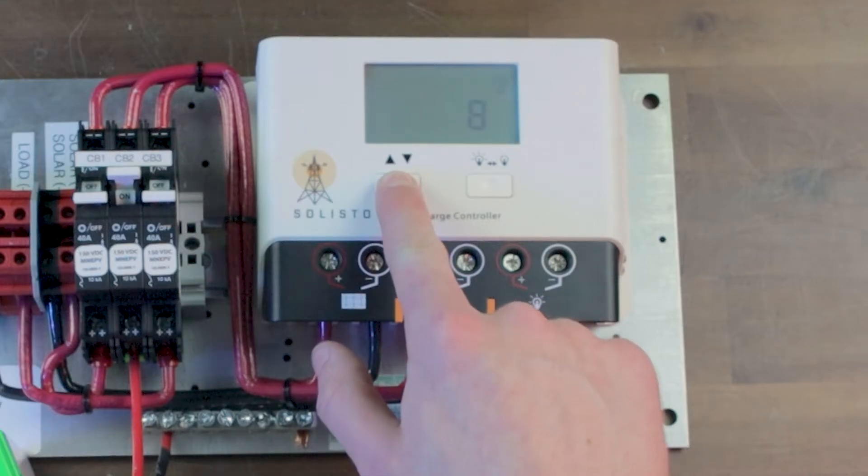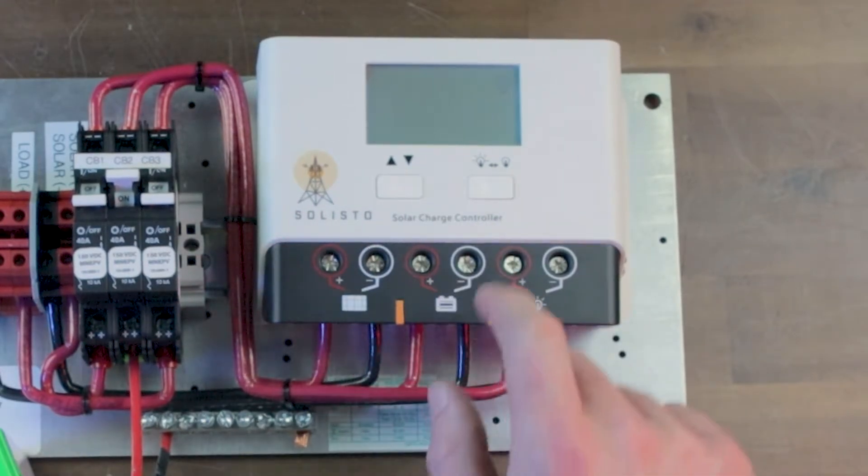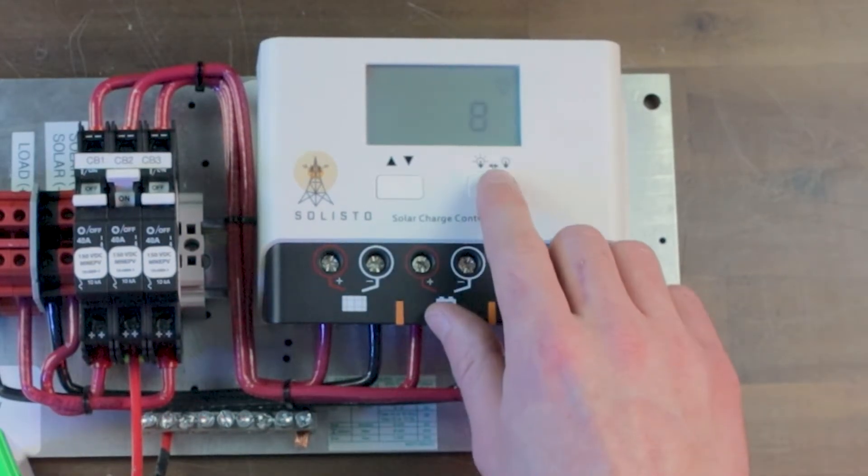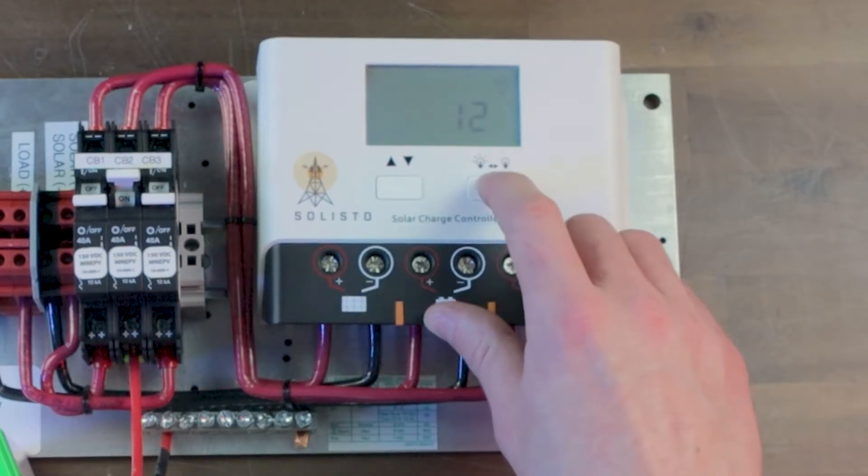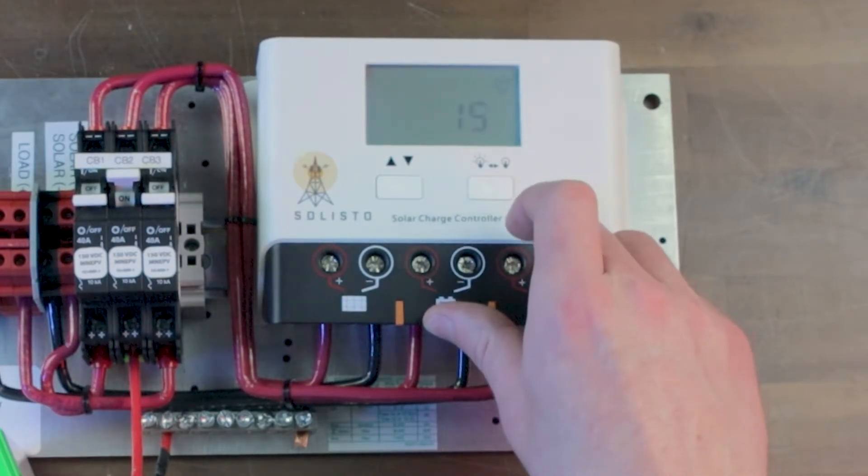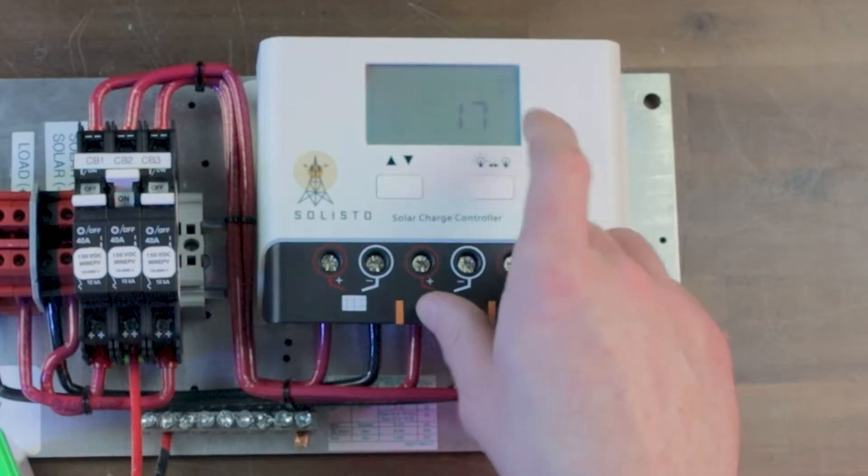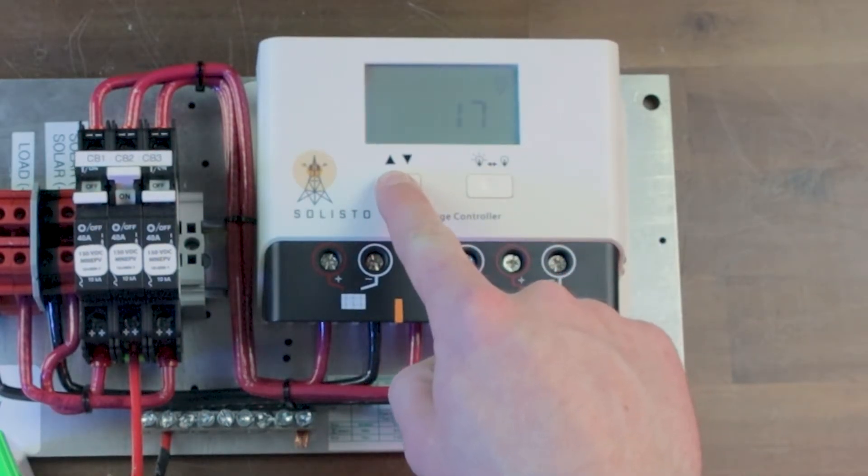Once this number is flashing, use the load button to cycle through until you get to the number 17. That will put it in normal load mode, and then hold down the arrow key once more until it stops flashing.